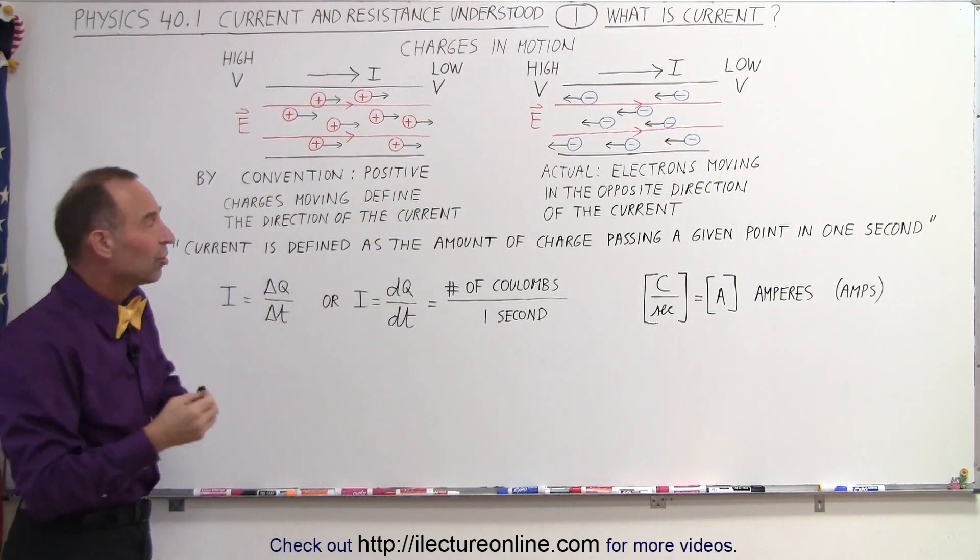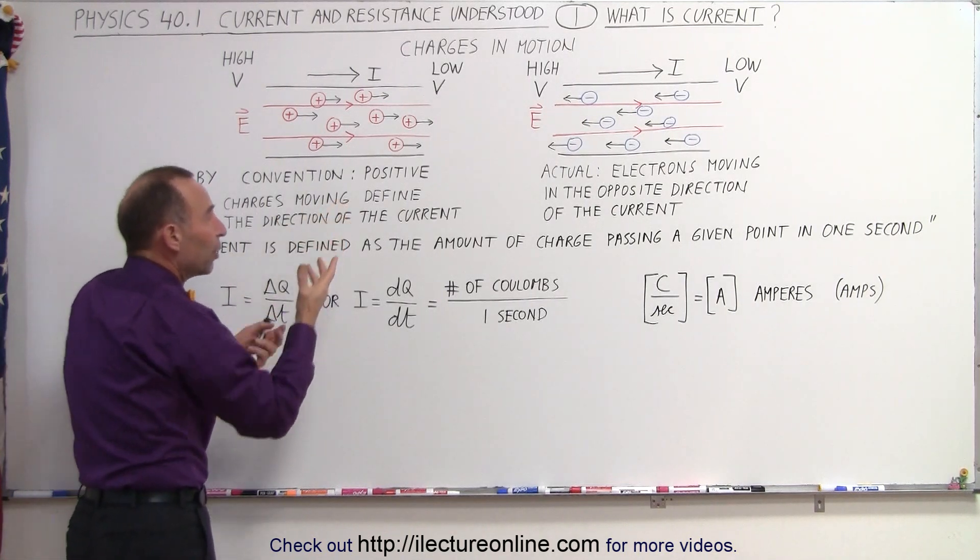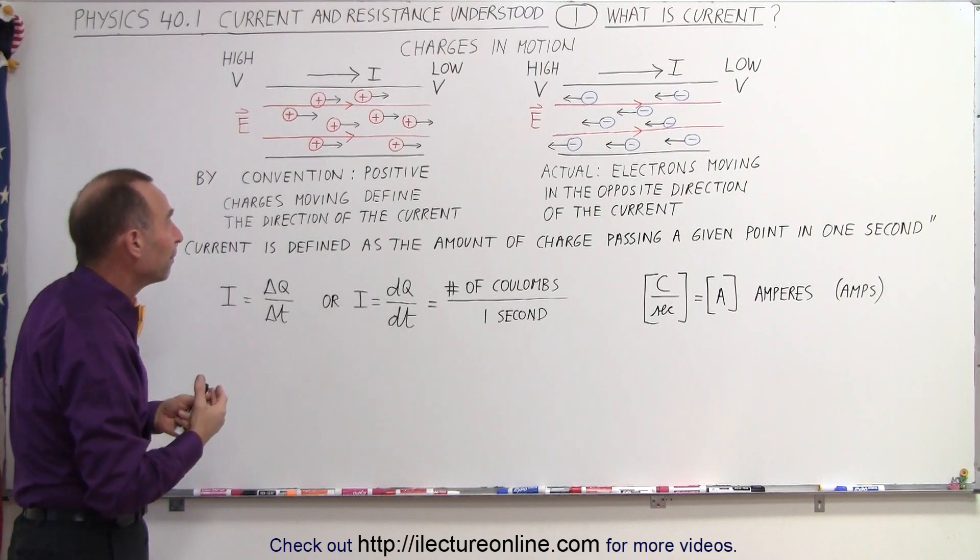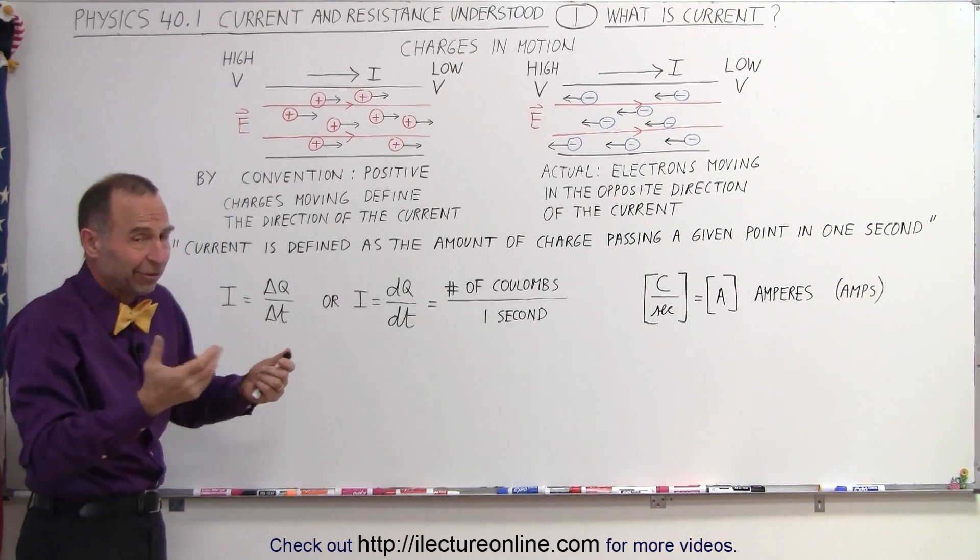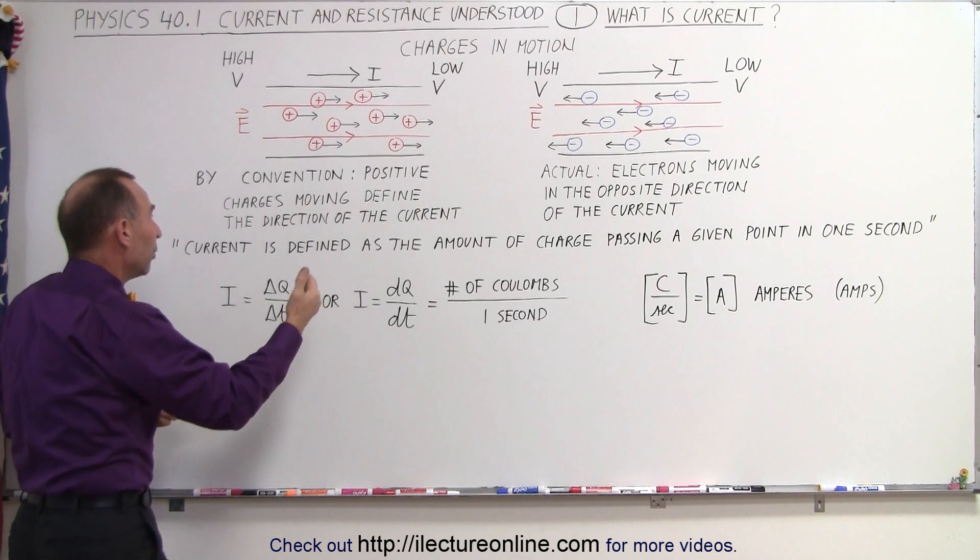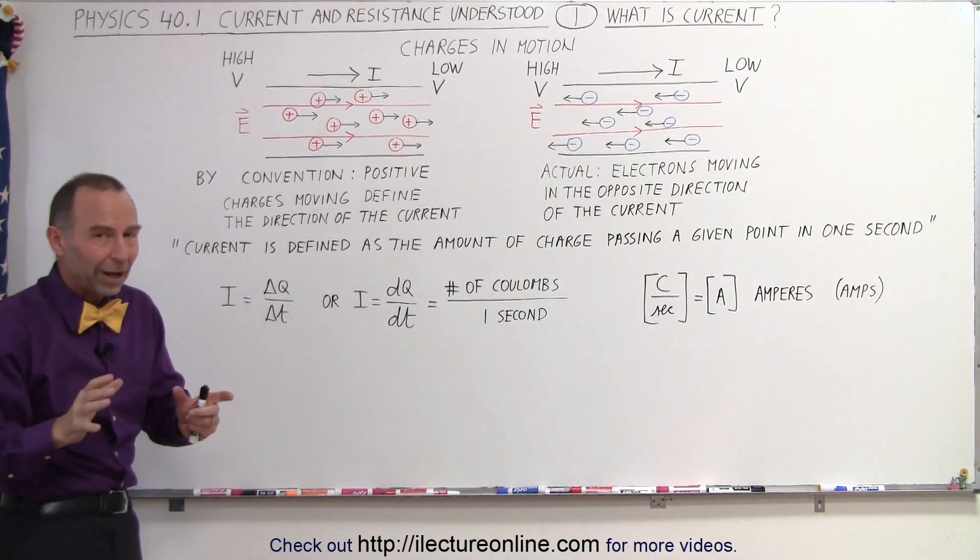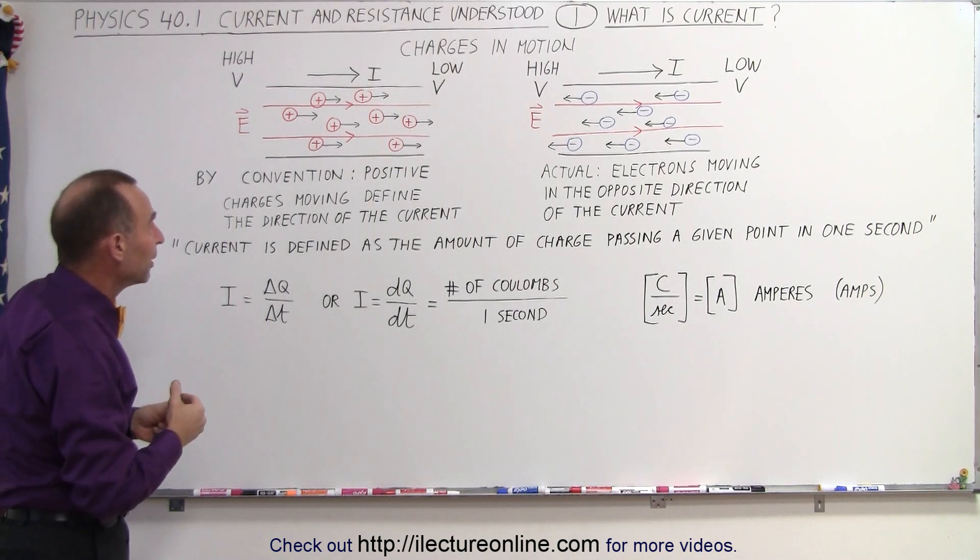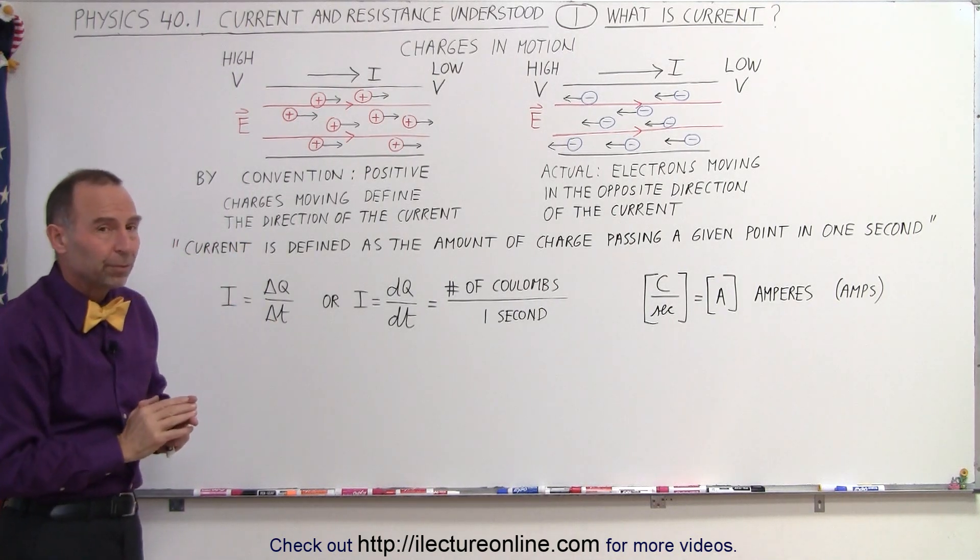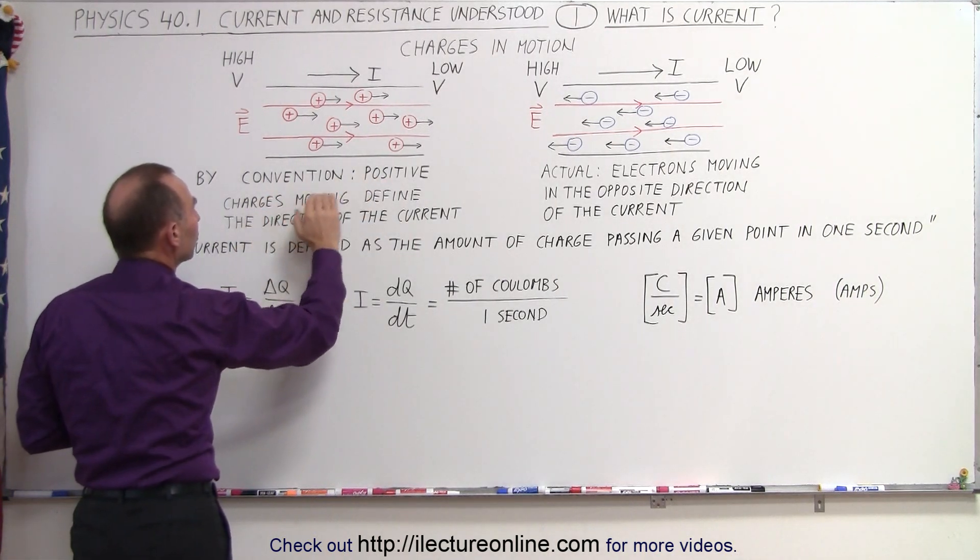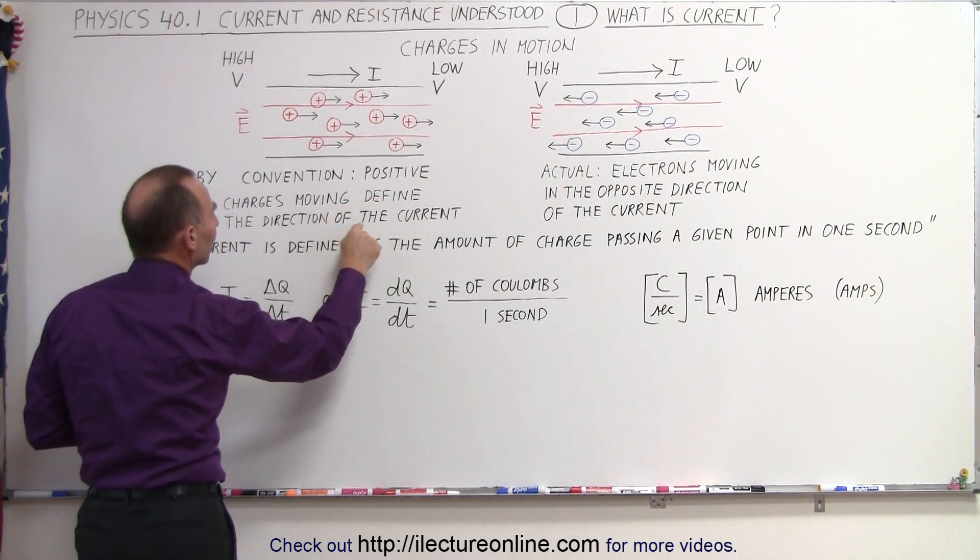Now notice, by convention, we had decided a long time ago, since we really didn't know if it was the negative charges that were moving or the positive charges that were moving. Basically we flipped a coin in a way, and they said it's the positive charges that are moving. Of course, by now we know that's incorrect, because in actuality, it's the electrons that are moving. But we stuck to the convention. So therefore, the way we look at current is that the positive charges are moving, defining the direction of the current.